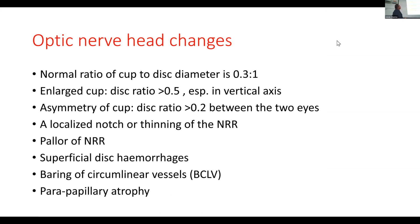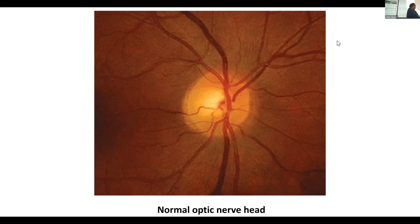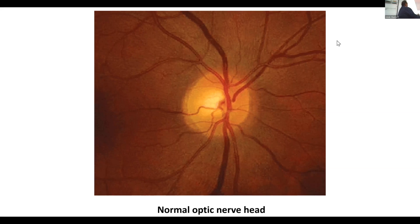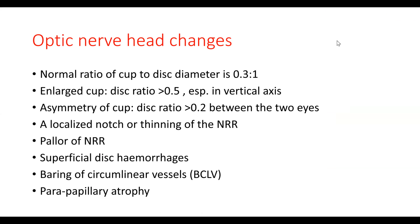In large cup-disc ratio, once it goes to more than 0.5, especially in the vertical axis, it indicates loss of nerve fiber layers, because this cup is being filled by the nerve fiber layers. They come in a particular arrangement, and once there is loss of these nerve fiber layers, there will be emptying of this space and the cup will start enlarging. There will be thinning of the neuroretinal ring. There is asymmetry of cup-disc ratio — if one side is 0.4, the other side should also be 0.4, but if there's a difference of more than 0.25, that is significant asymmetry.